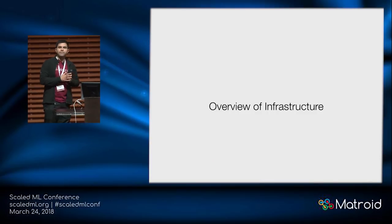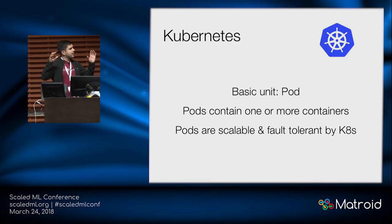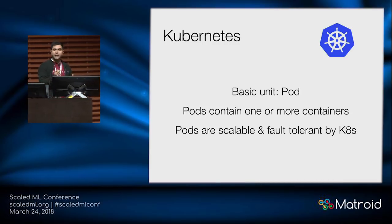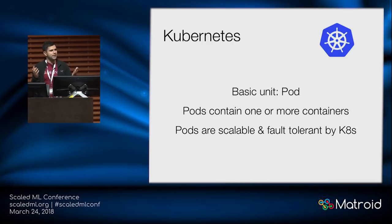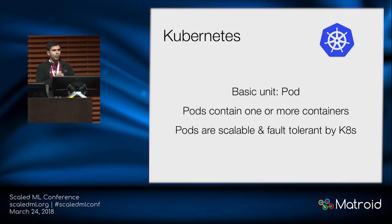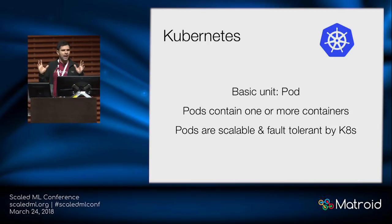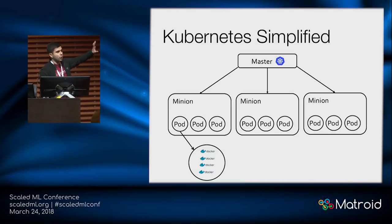We're going to quickly dive into our infrastructure. The basic tool that manages our infrastructure is Kubernetes. The basic unit in a Kubernetes cluster is a pod. A pod is a collection of one or more containers. A container is a lightweight virtual machine — specifically Docker containers in our case. Pods are made scalable and fault tolerant by Kubernetes. At a very high level, pods are the important part and I'll go into them in a second.